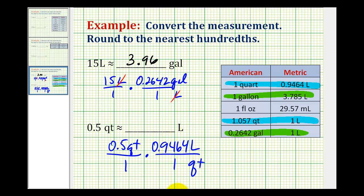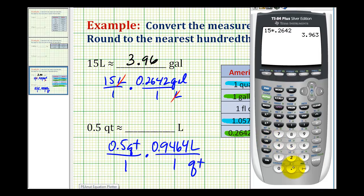And we'll go back to the calculator one more time to determine this product: 0.5 times 0.9464. So rounded to the nearest hundredth, we have approximately 0.47 liters.